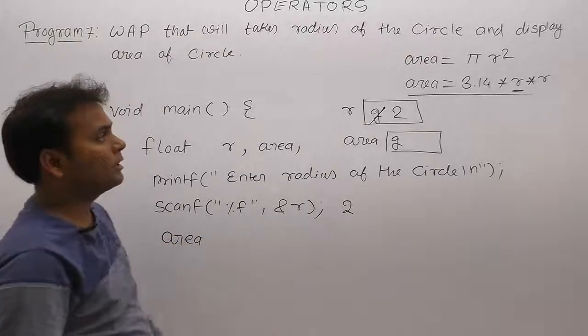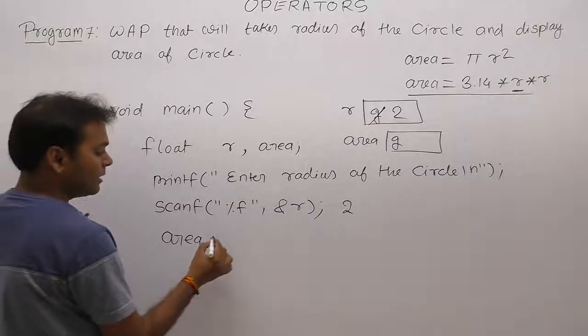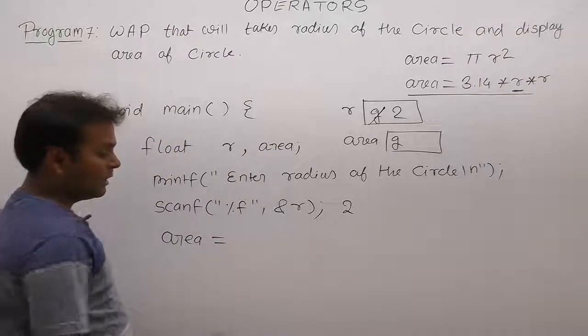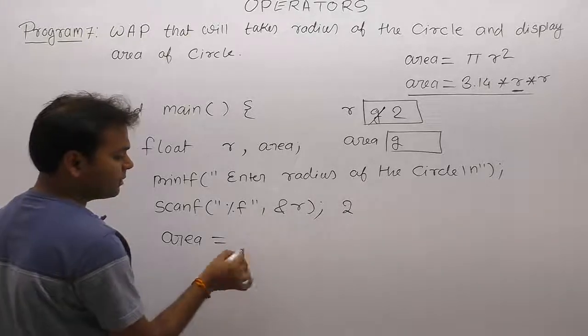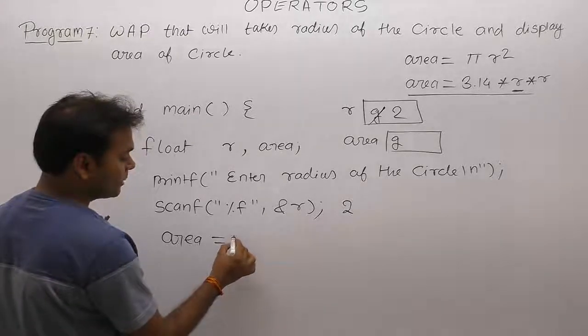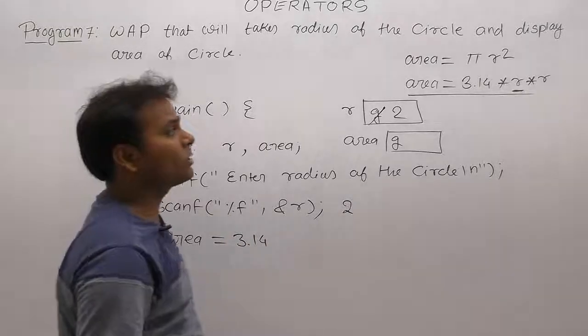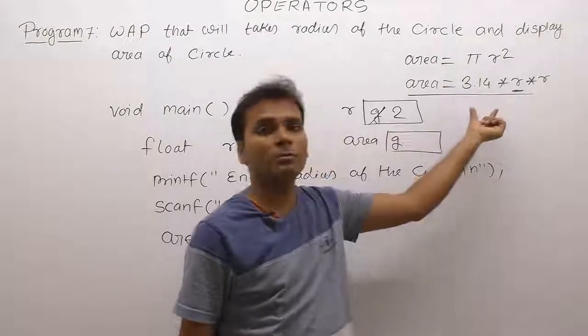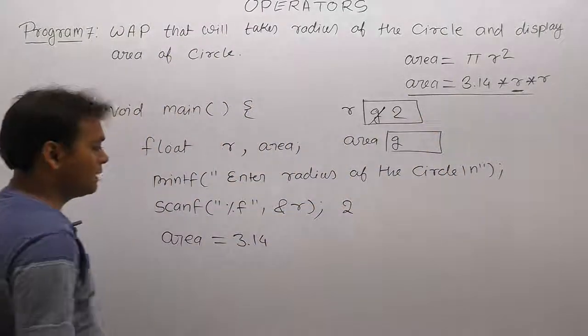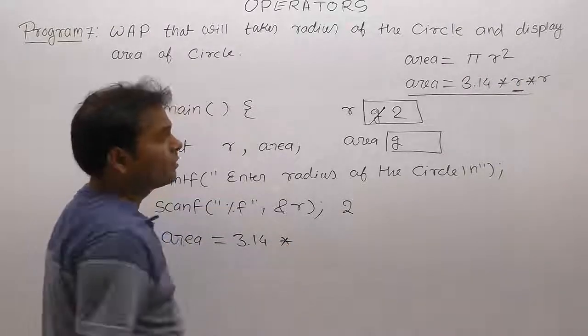Next one, simply the logic. Already we are putting that expression logic for calculating area of the circle. Simply area equals to, in place of pi we are writing either 22 divided by 7 or we are writing directly 3.14. Here 3.14 is a constant value. Therefore there is no need of declaring separate variables for storing 3.14. 3.14 directly write is possible, multiply r square.